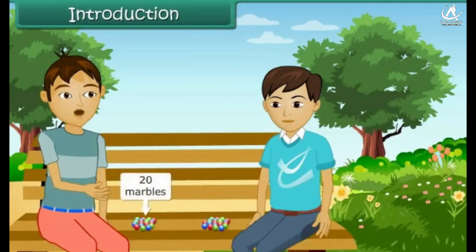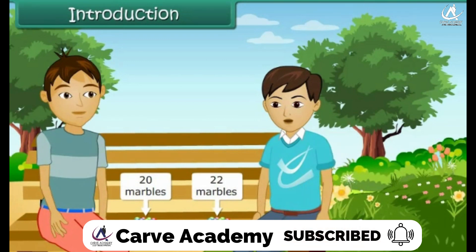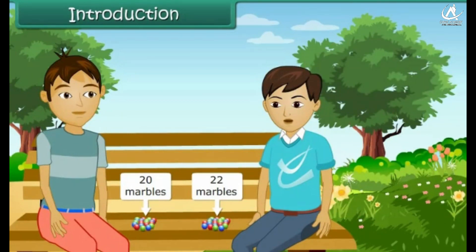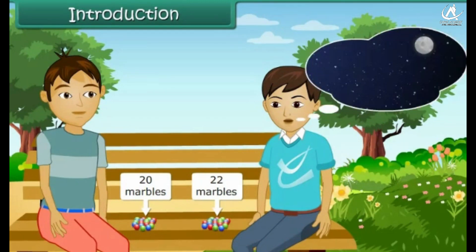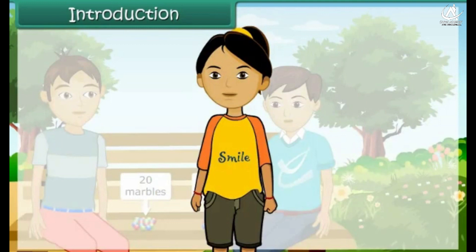I have 20 marbles, I have 22 marbles — wow, I have more than you! We can count the things around us, like vegetables, cars, etc. Certain things cannot be counted, like stars in the sky or hair on our head. Mathematically, we are talking about whole numbers. Let us learn about whole numbers in this lesson.